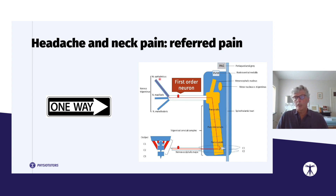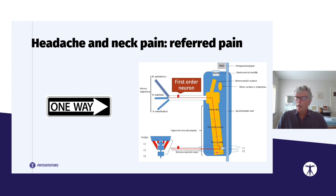Not only is afferent information from the ophthalmic nerve transferred to the dorsal horn of C1 and C2, but also afferent information from the upper cervical segments converges there. There is a convergence of input from the ophthalmic nerve and from the greater occipital nerve at the dorsal horn of C1 and C2. After this information crosses the threshold of the second-order neurons, those neurons transfer their signals via the spinothalamic tract towards the thalamus and the somatic sensory cortex.